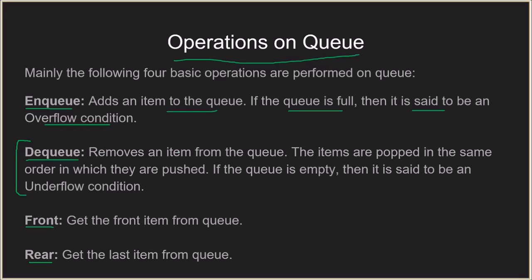Otherwise you just add the element. Coming to dequeue — similar to enqueue, we remove an item from the queue, but before that we check if the queue is empty. If the queue is empty it is said to be an underflow condition, and we cannot remove any elements because it doesn't have any elements. If it is not empty then we remove the item from the queue.